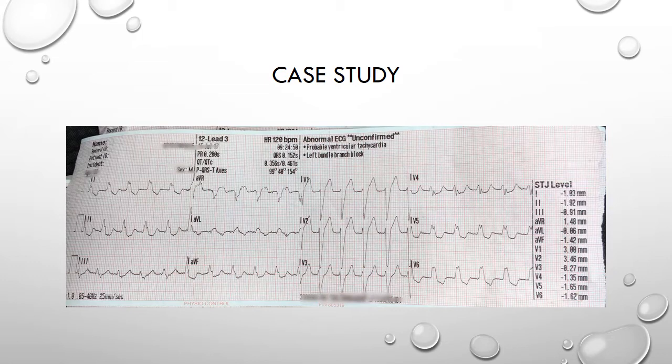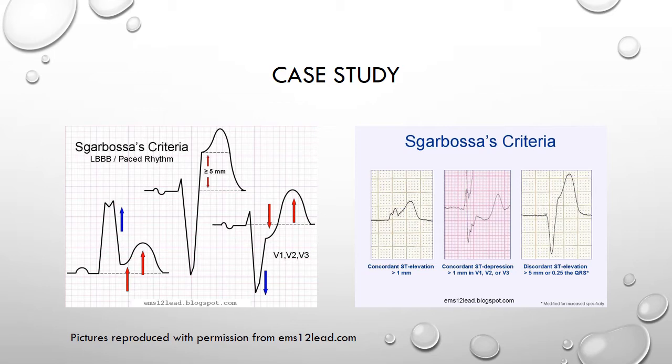The question we now want to explore is: is it possible to diagnose an MI based on an ECG presenting with left bundle branch block? And that question takes us to Sgarbosa criteria. Sgarbosa criteria — and the more recently validated Smith's modified Sgarbosa criteria — is used to diagnose patients having an infarction from their ECG where the underlying rhythm is left bundle branch block, and to meet the criteria requires a score of three points or more.